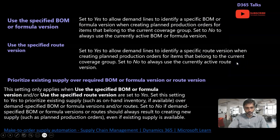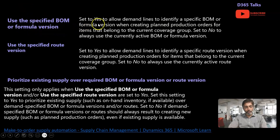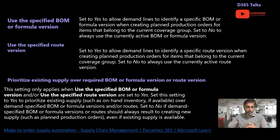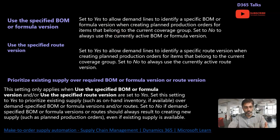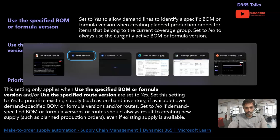The next important concept in coverage group is the BOM or formula version configuration. If you want to use a specified BOM or formula version, you need to enable that option. Typically in sales order lines you have the option to configure a specific BOM to explode and generate demand — in those cases you provide the BOM in the sales order line. Otherwise, master planning always takes the active BOM version against a specific sales order demand.